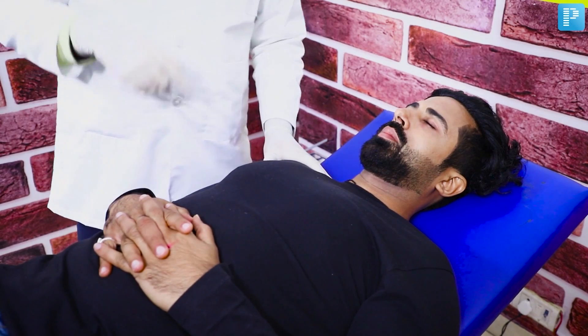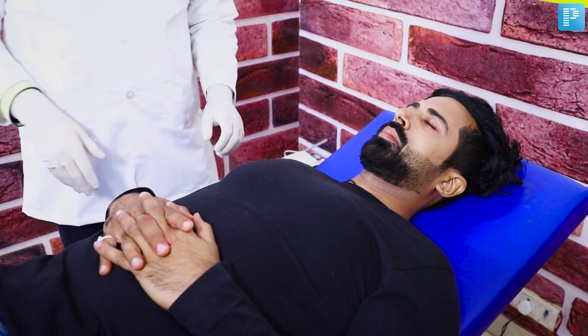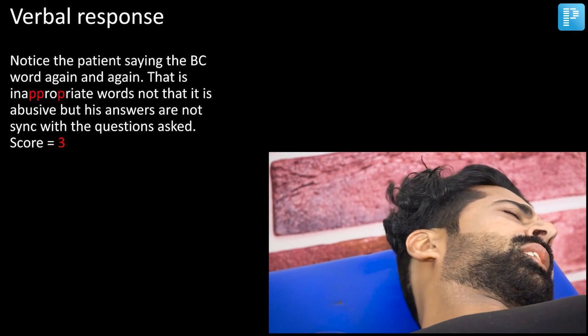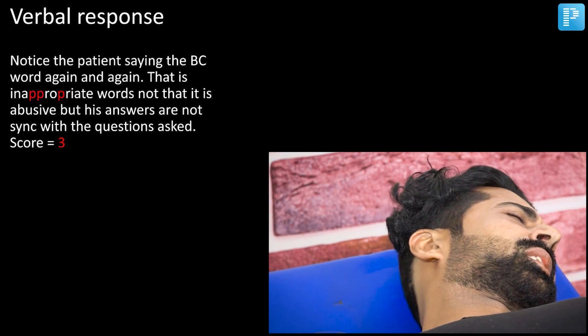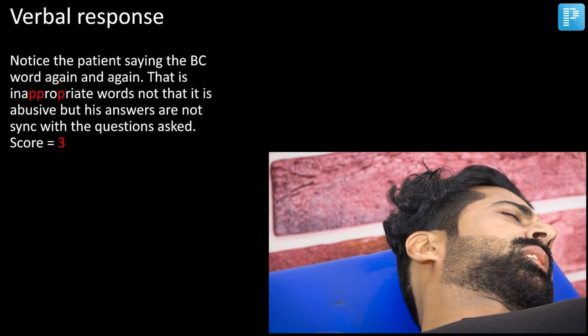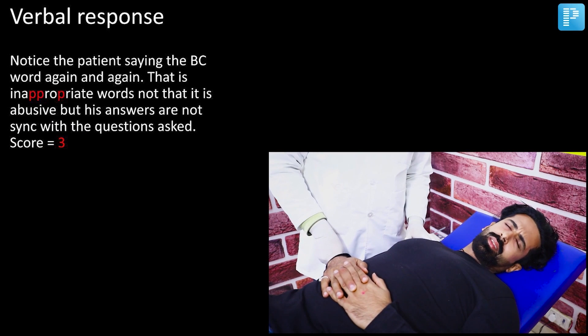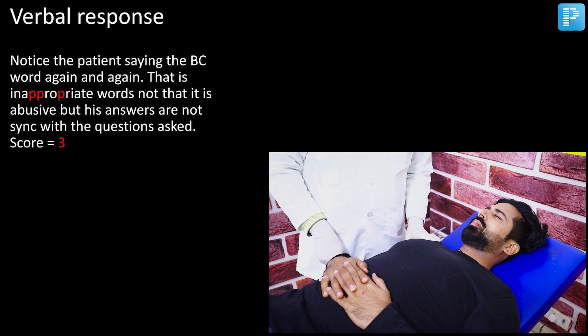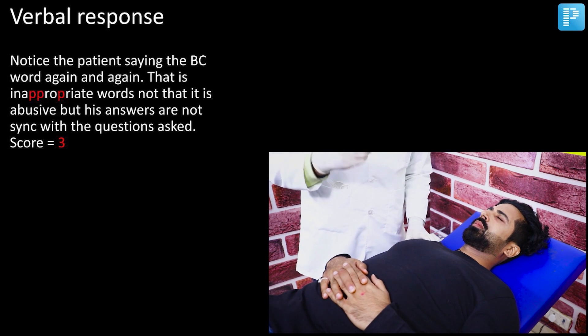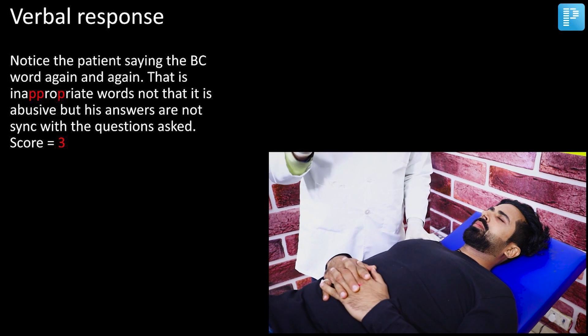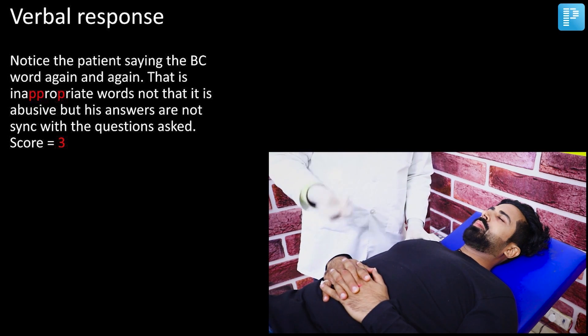Let's re-enact the scenario once again. I have come to the bedside of the patient, touching him physically. You can see that the patient is using inappropriate words. Inappropriate words would mean this is a score of 3. To remember this: the word 'inappropriate' has the letter P appearing three times, which implies a score of 3.